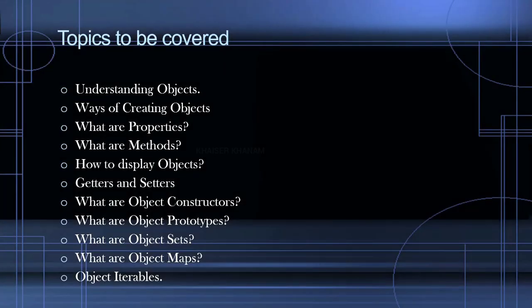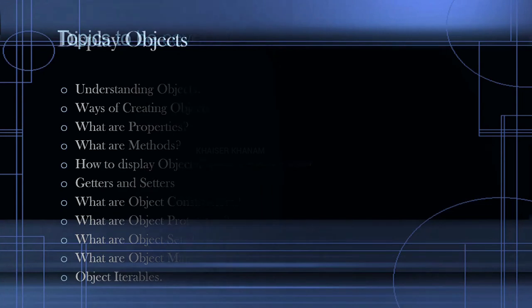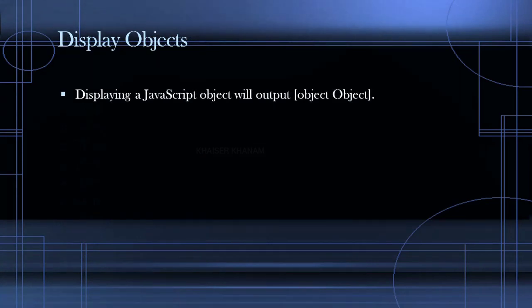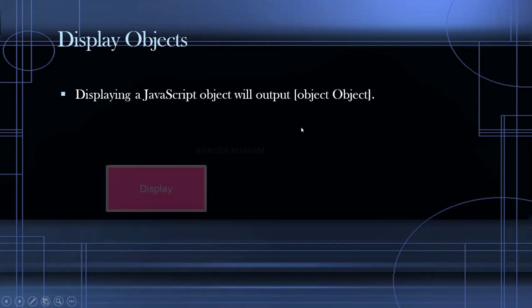Let's continue with our object session. In this session we are going to see what are the ways to display objects. We have seen properties, we have seen methods, and also we have seen different ways of accessing properties and methods. Now we are going to see what are the ways to display objects. There are different ways of displaying objects.